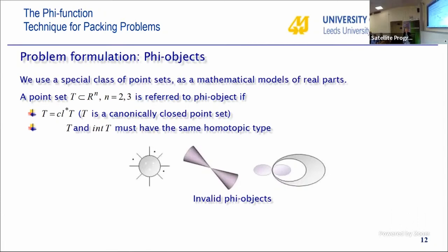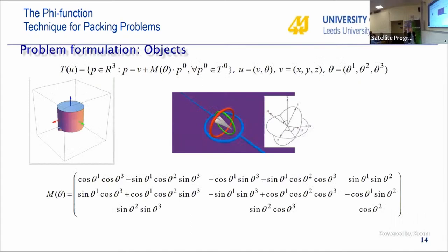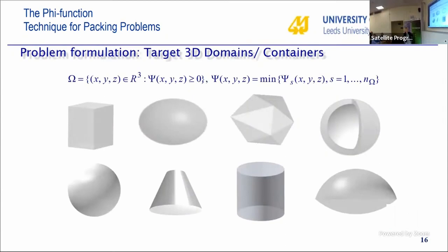Objects may also be represented as a union or intersection of basic shapes — this class is called phi-objects and is a key tool in our consideration. Each point-set object can be continuously rotated and translated in the three-dimensional case. We also consider motion vectors including translation parameters and rotation angles. Domains can also have variable metric characteristics, and in the three-dimensional case may be bounded by cylindrical, spherical, or conical surfaces and planes.